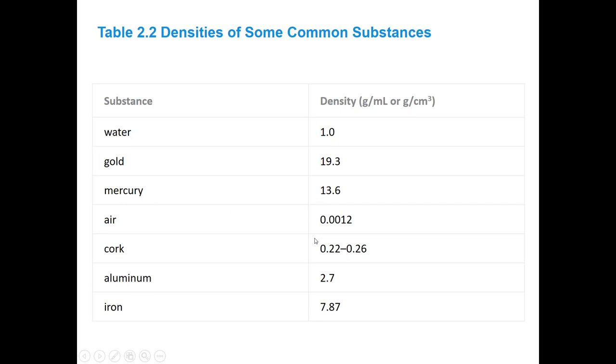Cork is somewhere between 0.22 and 0.26. Aluminum is about 2.7 and iron is 7.87.